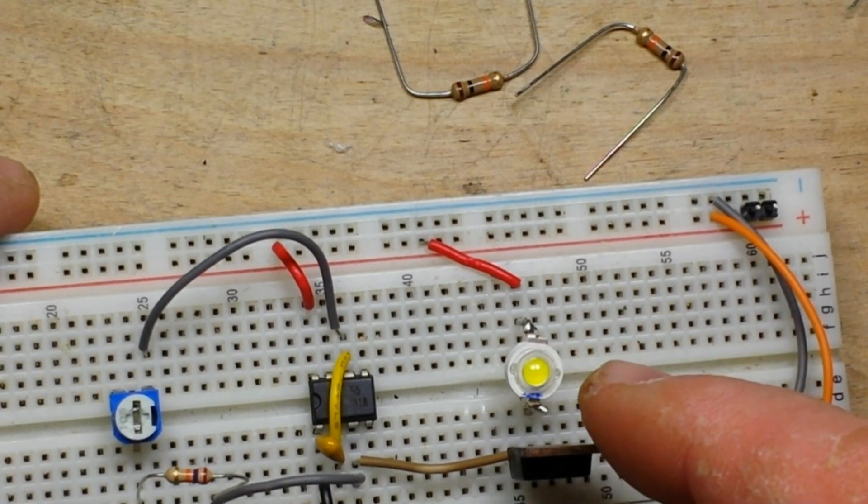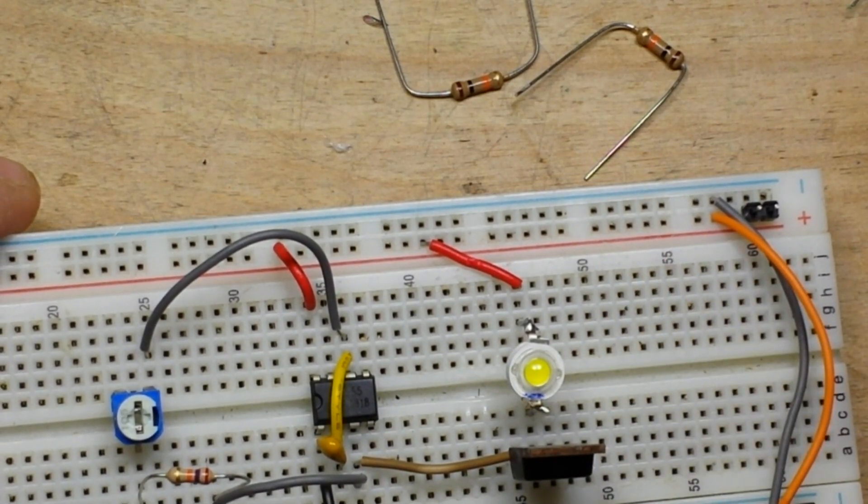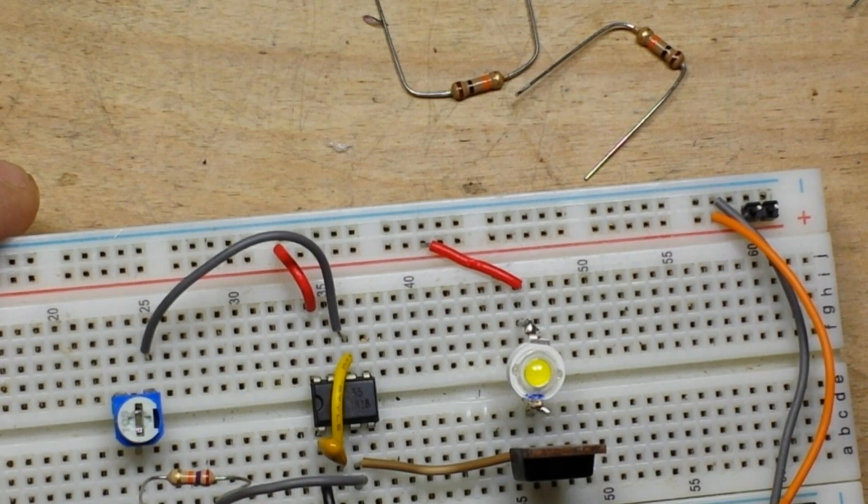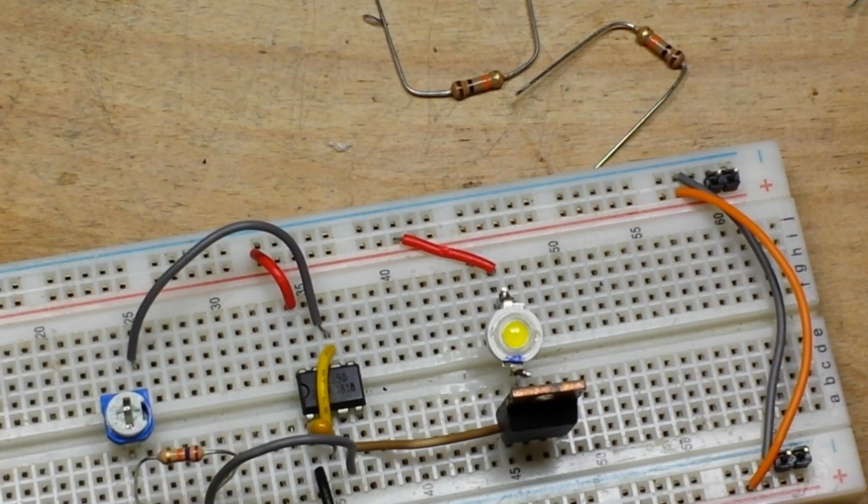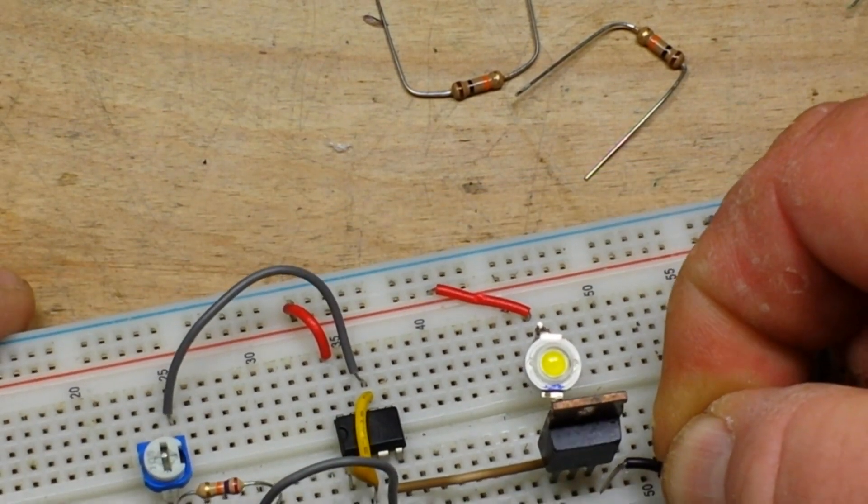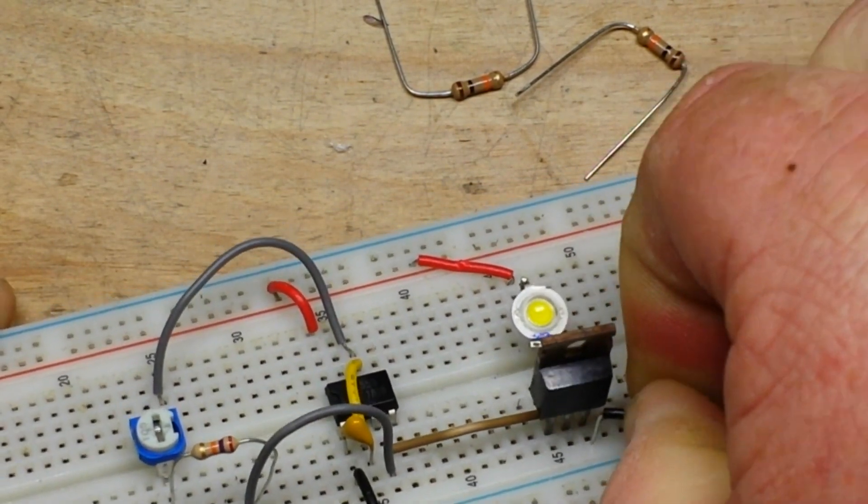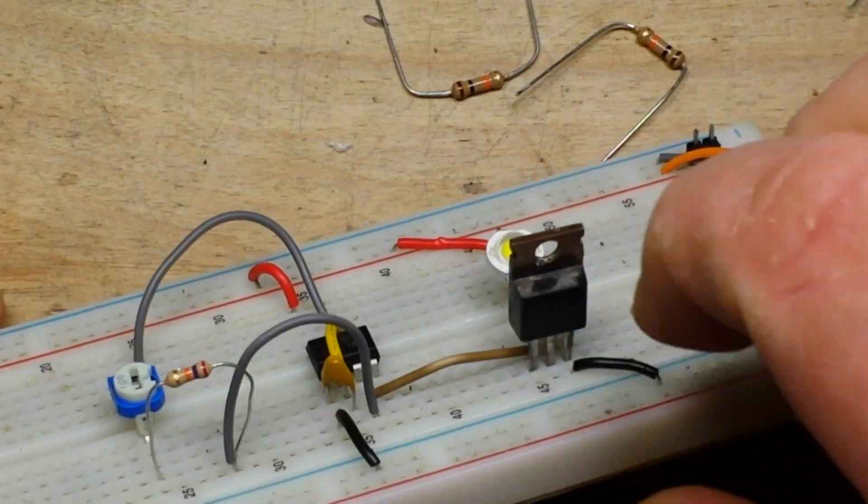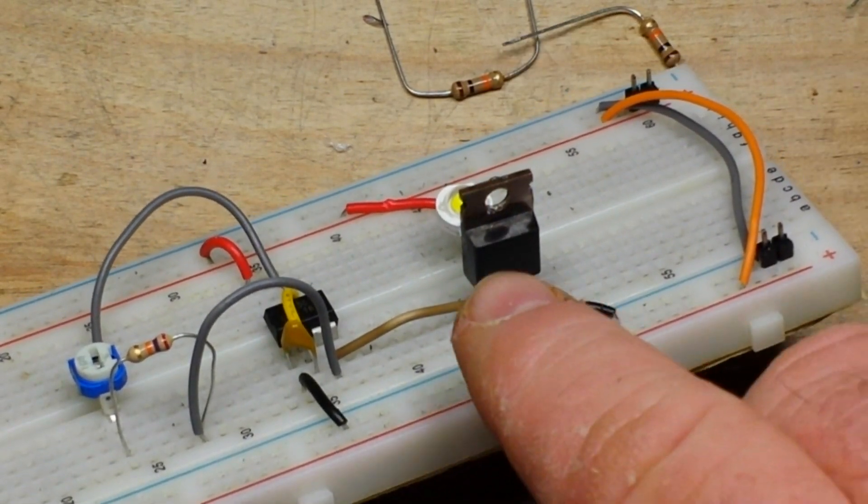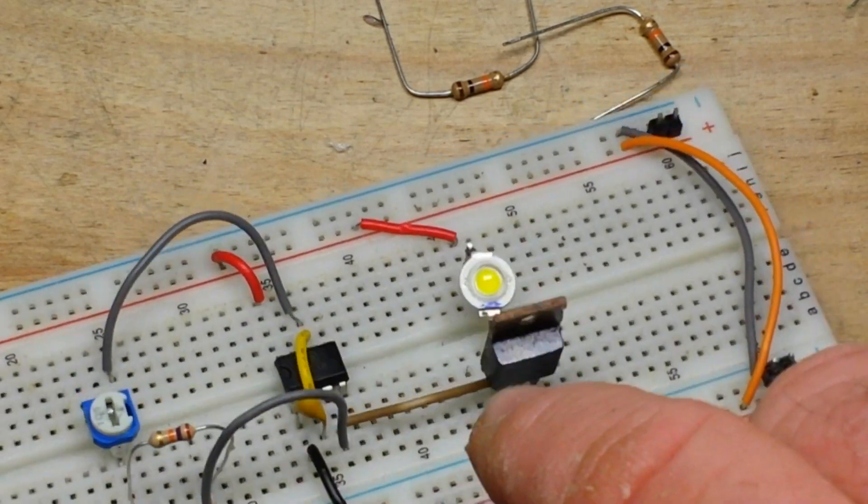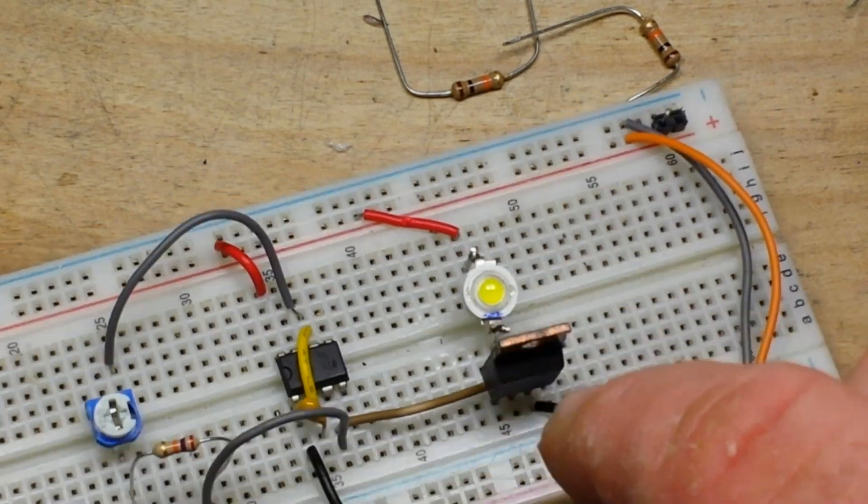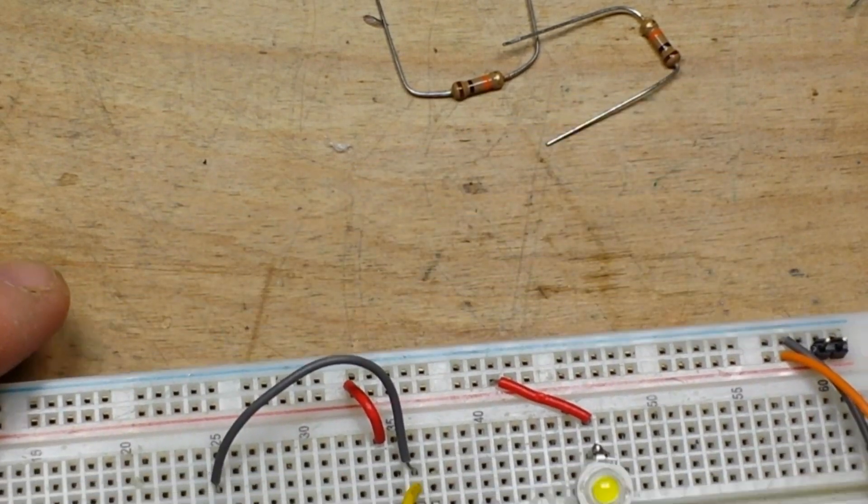I've got this set for about five volts and I'm limiting the current at about 350 milliamps. And then our source goes to ground, just like that. So gate goes to pin 3 of the 555, drain goes to the cathode of our LED, and source goes to ground.